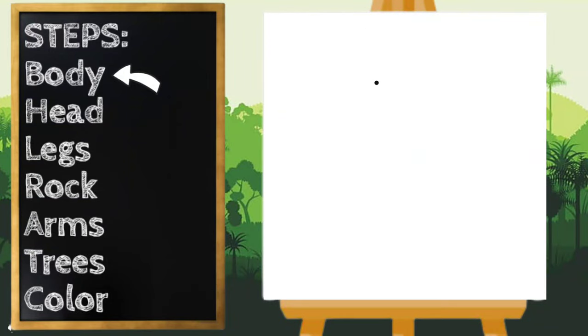Let's start with Roz's body and I'm going to draw a line going across my paper. And then I'm going to start over here on the left side and draw a U-shape, down and up.